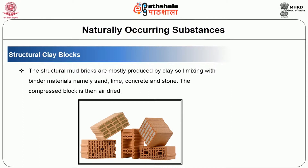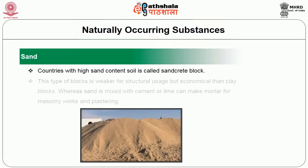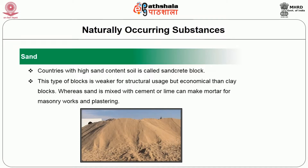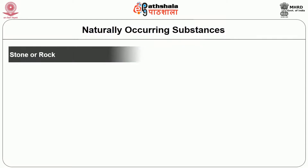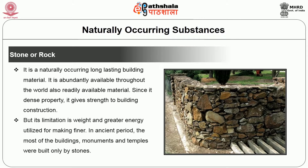The compressed block is then air dried. Next is sand. Countries with high sand content soil use what is called a sand creep block. This type of block is weaker for structural usage but more economical than clay blocks. Sand mixed with cement or lime can make mortar for masonry work and plastering. Stone or rock is a naturally occurring, long-lasting building material, abundantly available throughout the world. Its dense property gives strength to building construction, but its limitations are weight and the greater energy required for making it finer. In the ancient period, most buildings, monuments and temples were built using stone.